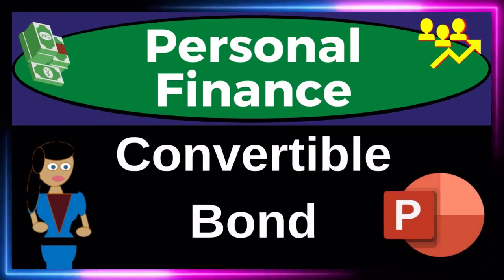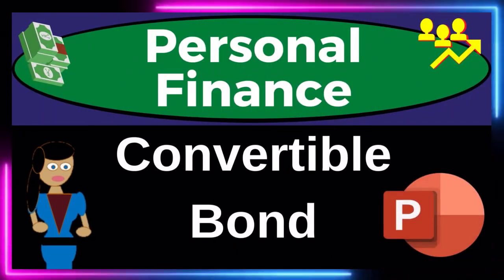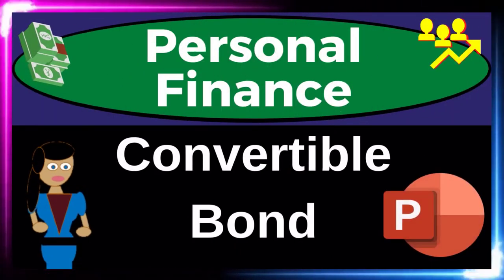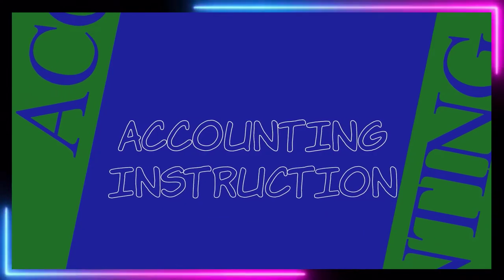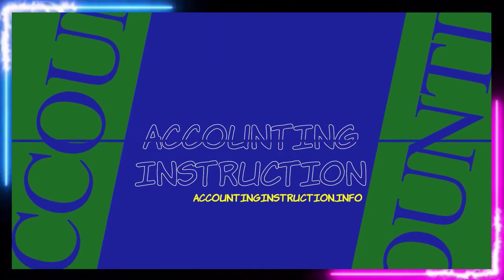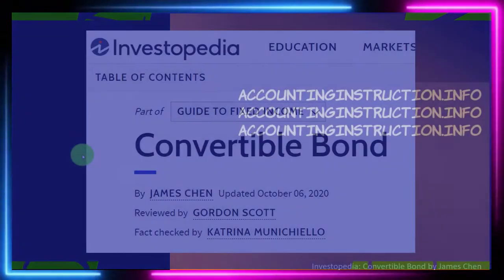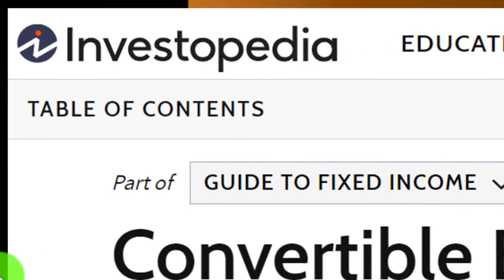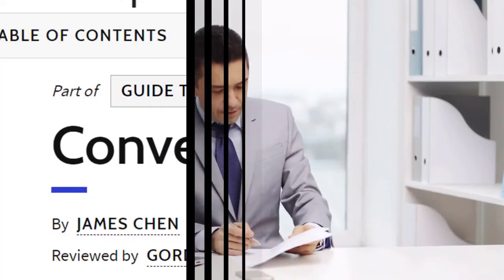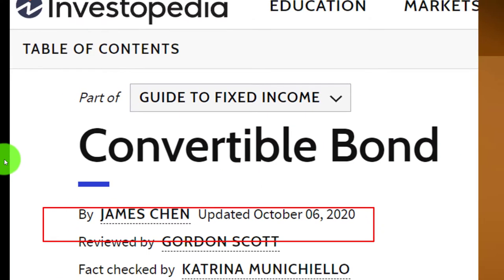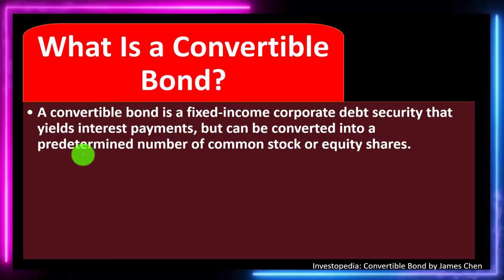Personal Finance PowerPoint Presentation: Convertible Bond. Prepare to get financially fit by practicing personal finance. Most of this information can be found at Investopedia Convertible Bond, which you can find online. Take a look at the references and resources and continue your research from there. This is by James Chen, updated October 6, 2020.